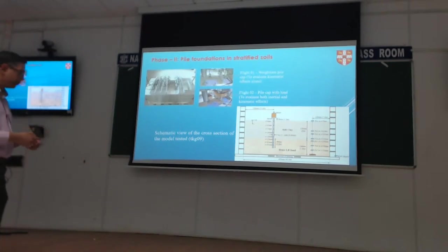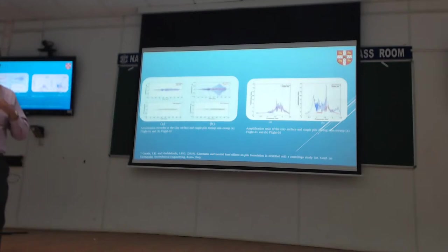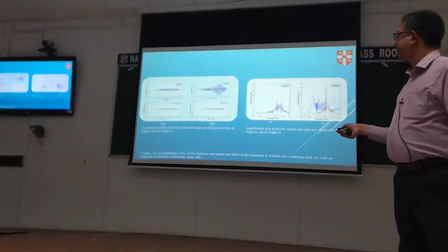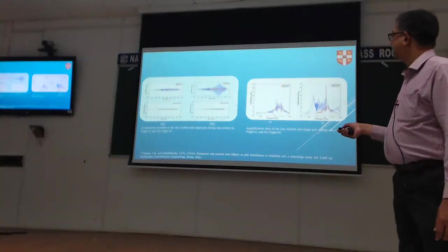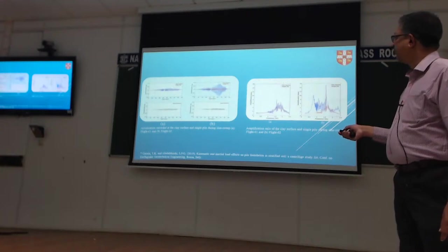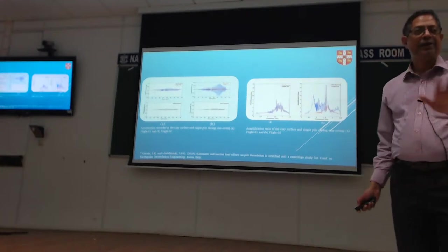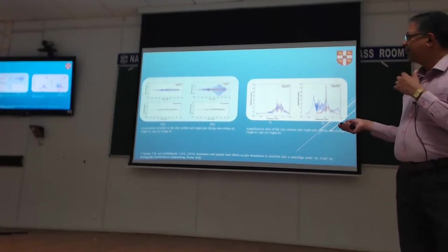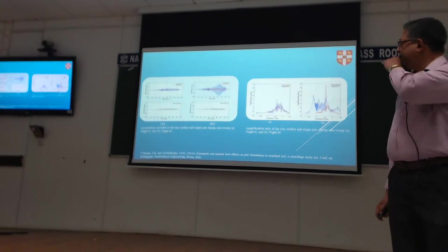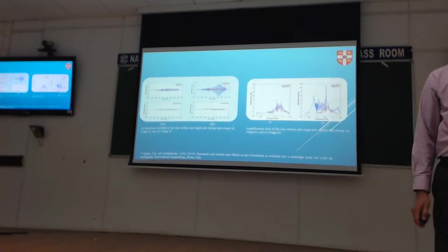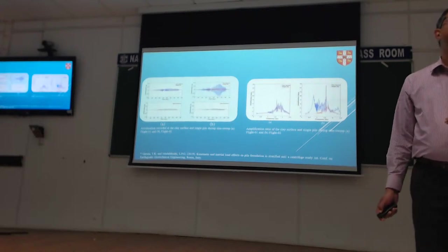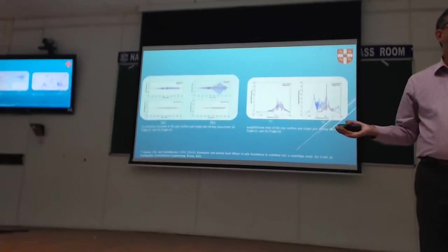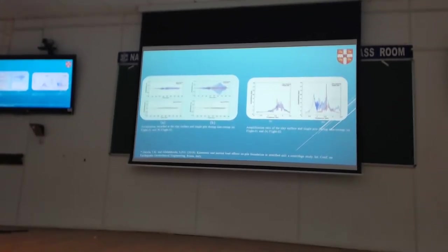Now, this graph makes more sense. So, this is for flight one and that's for flight two. Red is clay and blue is the pile. Both are single pile. Clearly, when I have just the kinematic interaction, the pile and the soil are doing pretty much the same, which is what you should expect. Because, there's nothing else for the pile to do. It just follows whatever the soil asks it to do.